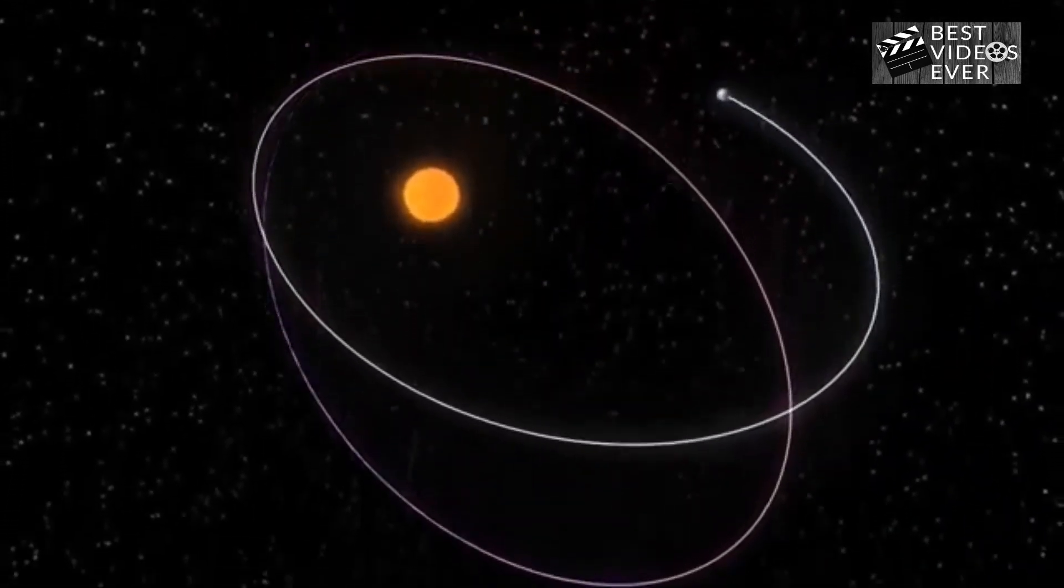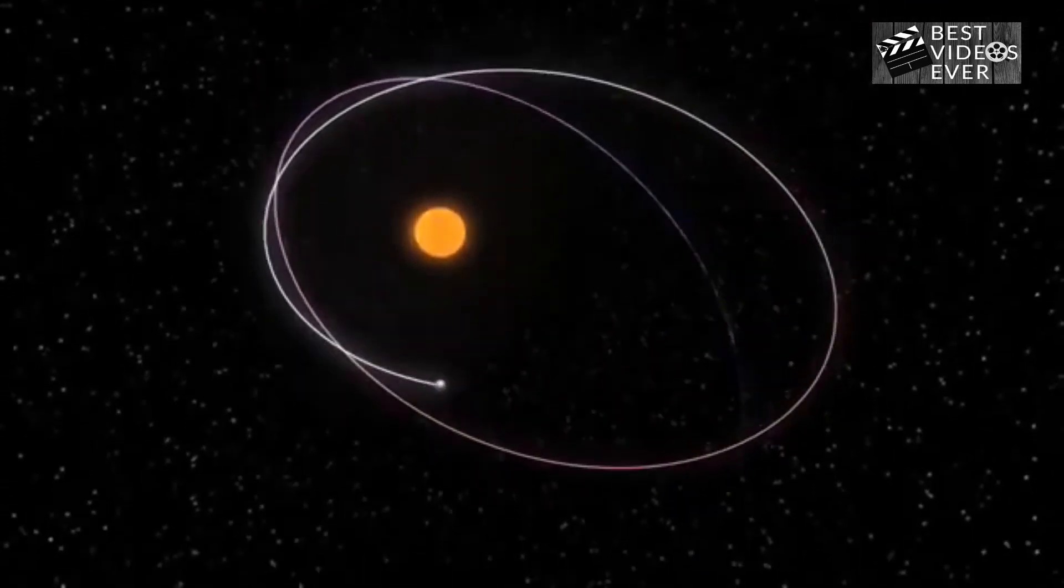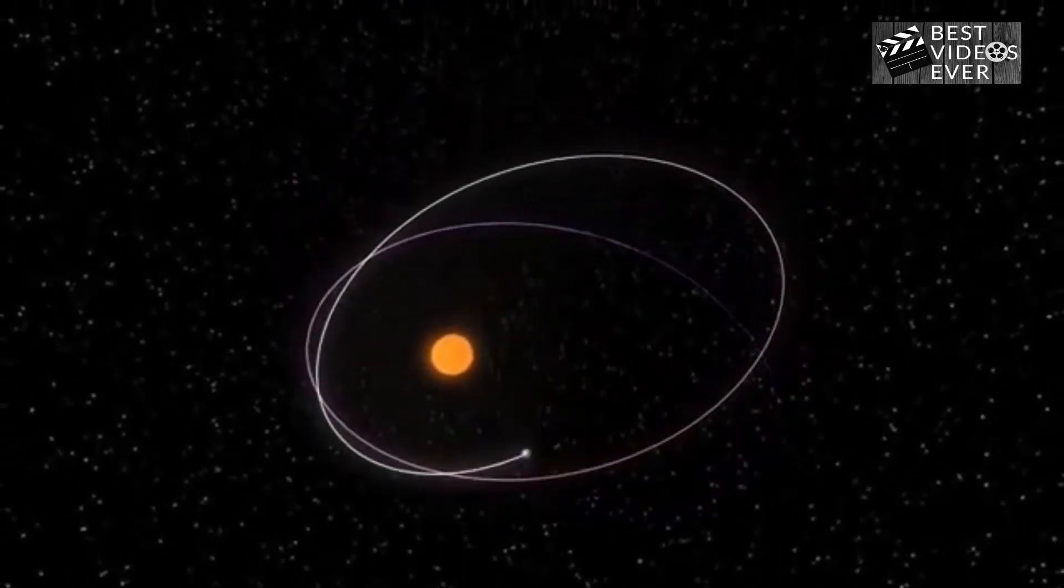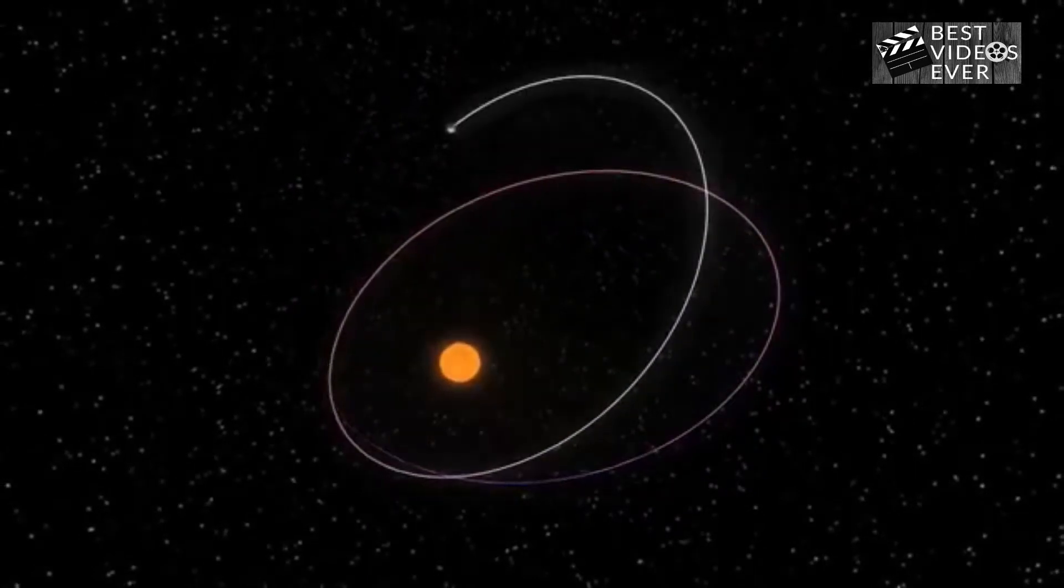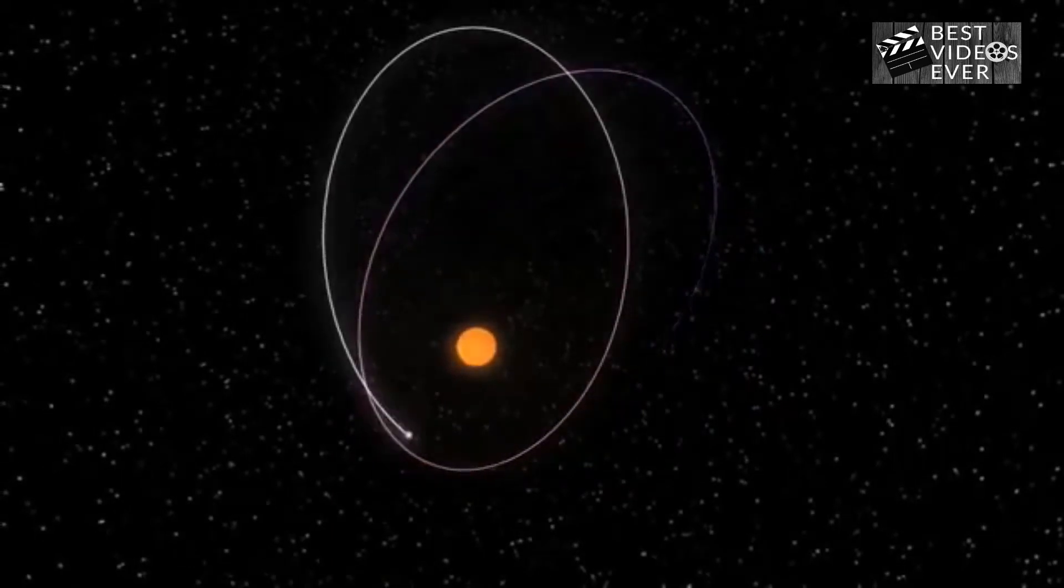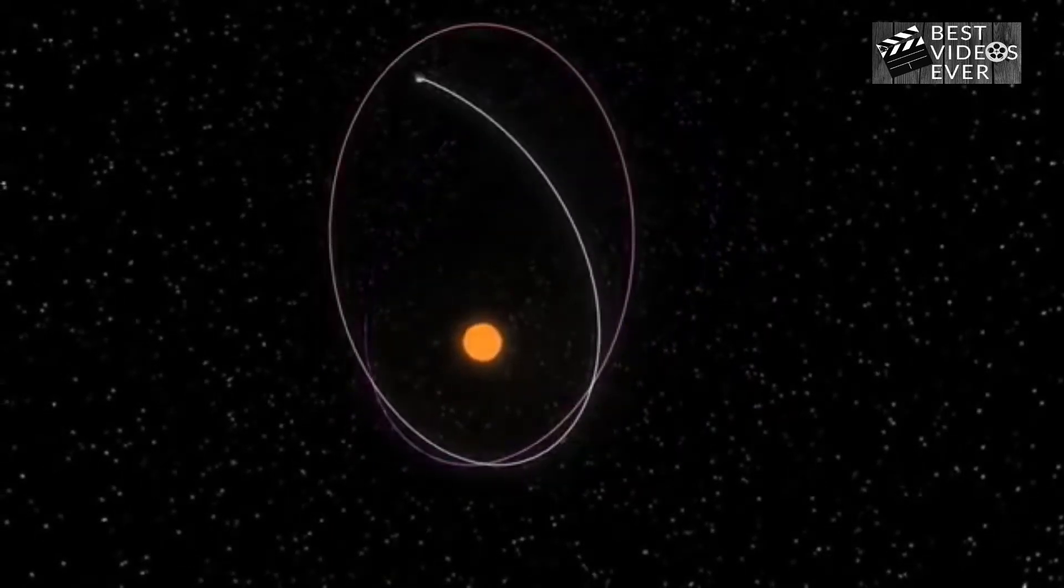A year on Earth is measured by one complete trip around the Sun. Seems simple enough, but there is a problem. The Earth doesn't travel in a path around the Sun that returns to its starting point. So how do we know when a year starts or ends?